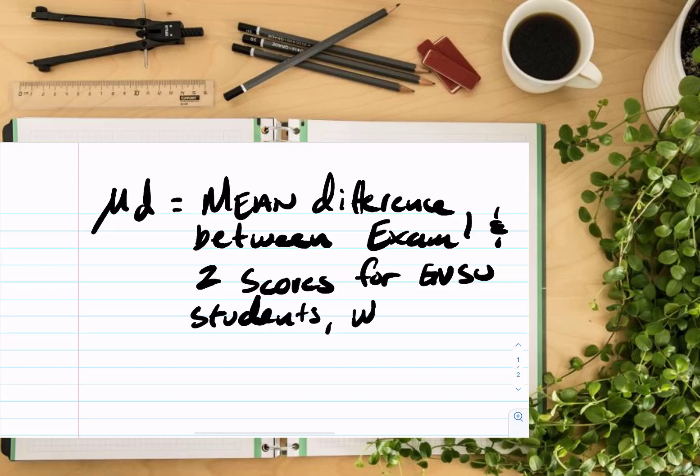And at this point, the order doesn't matter. It's when we actually state how the differences were found, which is the end of the sentence, that it matters. So here we would say where differences equals exam two minus exam one.